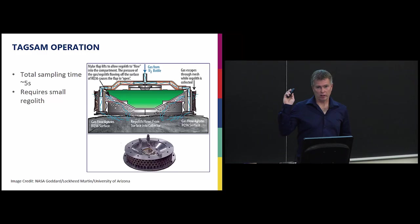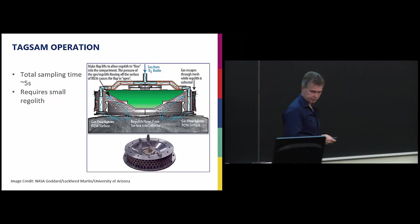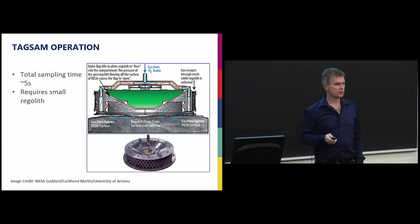This is how it works. It's actually like a reverse vacuum cleaner. There's no air, so we can't just suck up the air in some of the regolith. What we do is we have some nitrogen bottles, and when some microswitches touch the surface, we blow the nitrogen bottles, and the nitrogen comes down and blows regolith up into this sampling container. So regolith are the loose particles on top of an asteroid or another planetary body.